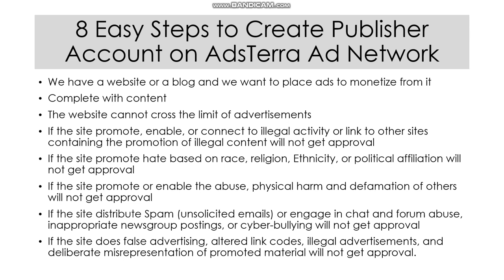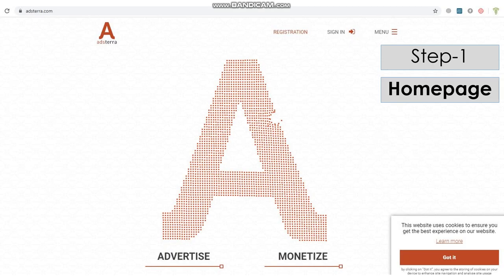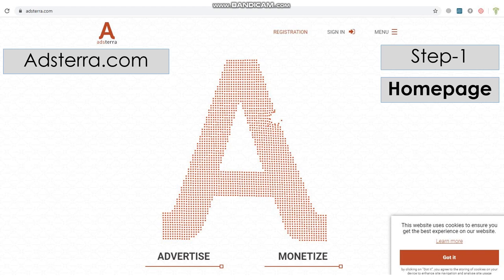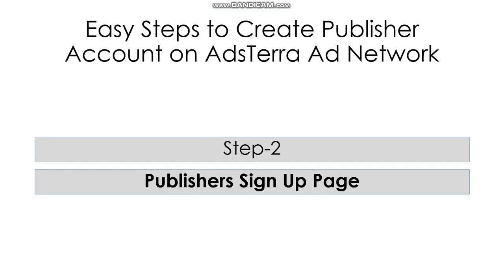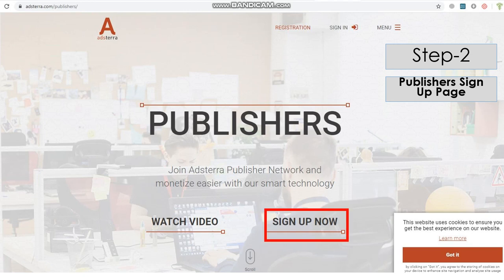So, let us start the step-by-step process to create a publisher account on Adsterra Ad Network. At the first step, go to the homepage Adsterra.com and click the Monetize button to create a publisher account. You will be prompted to the registration page. Here, click the Sign Up Now button and the registration process will start.